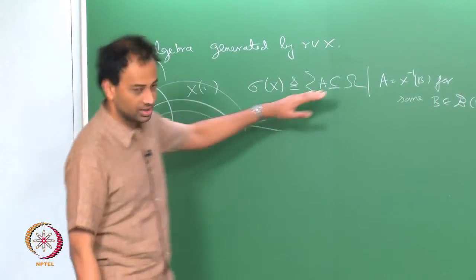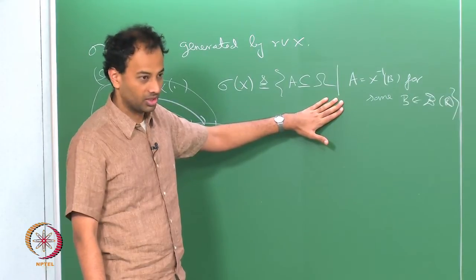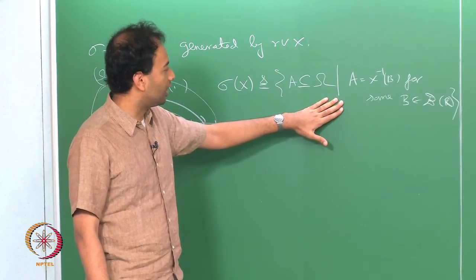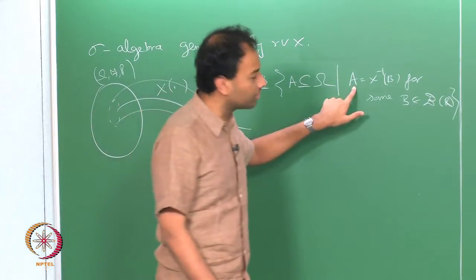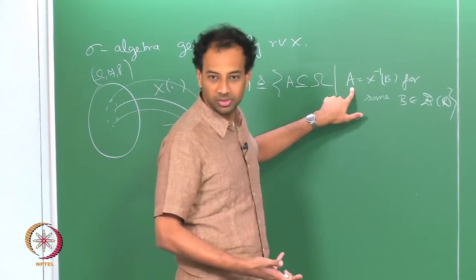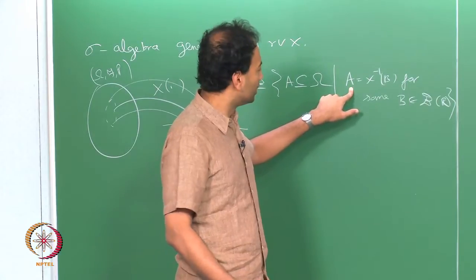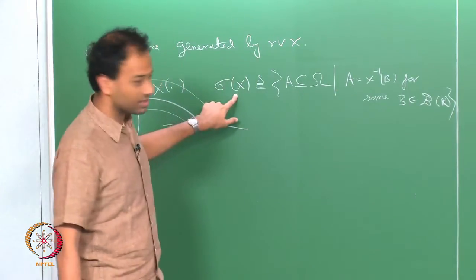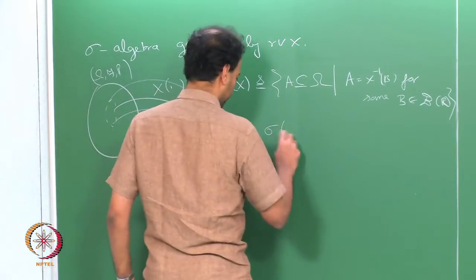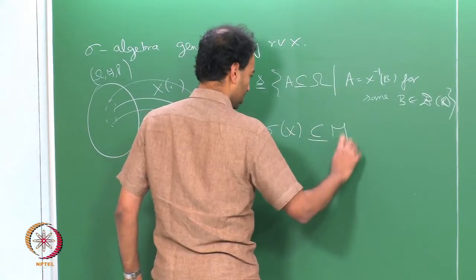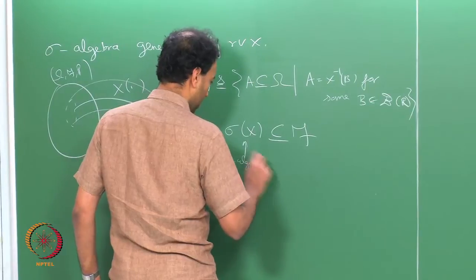We can show that this is a sigma algebra — that is a very elementary proof, and you have already proved it in your homework by definition chasing. Because X is a random variable, every one of these A's is also F-measurable, since pre-images of Borel sets are events. Therefore, σ(X) is not only a sigma algebra, it is also a sub-sigma-algebra of F, so it is contained in F.